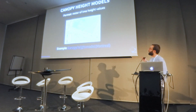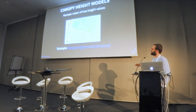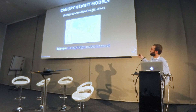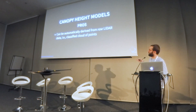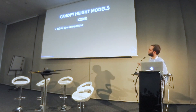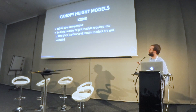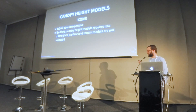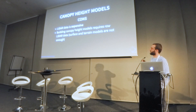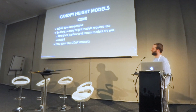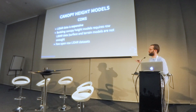Then we have canopy height models, which is a bit what Dimitri talked about. This is an example of Montreal — it's a raster where each pixel represents the height of the tree. The pros are that they can be automatically built from raw LiDAR data, from point clouds. The cons are that LiDAR data is expensive, and there are relatively few open raw LiDAR datasets available.